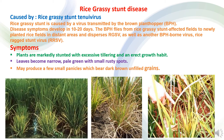Grassy stunt disease is also caused by a virus, transmitted by the brown planthopper (BPH). Disease symptoms develop within 10 to 20 days. The brown planthopper flies from rice grassy stunt-affected fields to newly planted fields and disperses the disease. The plants are markedly stunted with excessive tillering and an erect growth habit. Leaves become narrow and pale green with small rusty spots. Plants may also produce small panicles bearing dark brown unfilled grains, causing great impact on yield and growth.